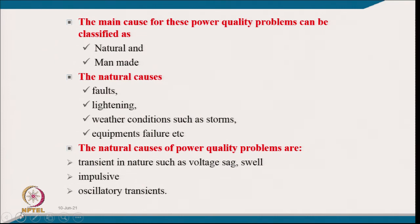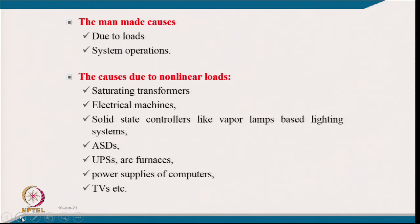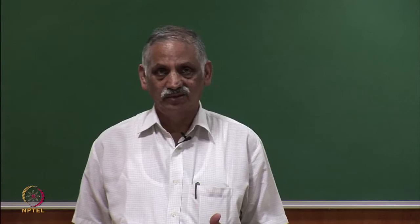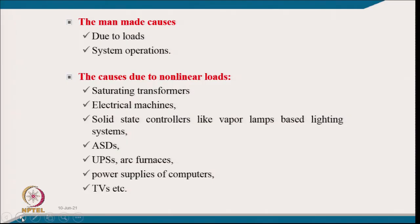Man-made causes are due to loads or system operation. Causes due to non-linear loads include saturating transformers and electrical machines, which do not have solid state devices but react to power quality problems through saturation. Solid-state loads include vapor lamp lighting systems, adjustable speed drives, uninterruptible power supplies, arc furnaces, switch-mode power supplies, and televisions — all of which cause power quality problems.